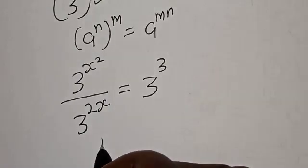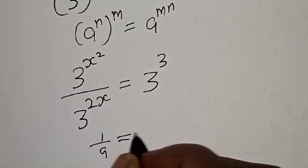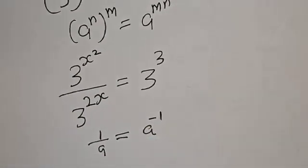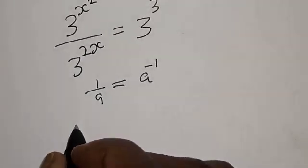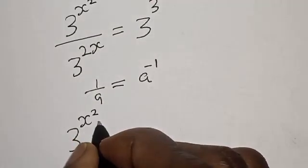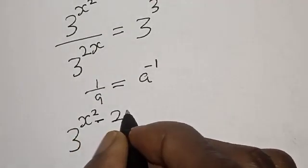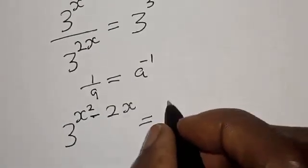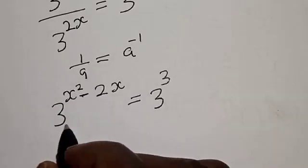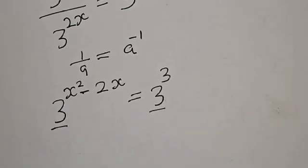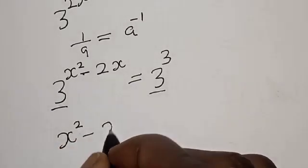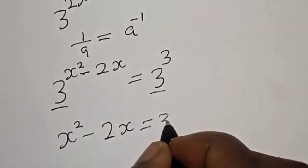Now, if you have 1 over a, this is equal to a raised to power minus 1. Applying this, we get 3 raised to power s squared minus 2s is equal to 3 raised to power 3. Since they have the same base, we are left with s squared minus 2s is equal to 3.